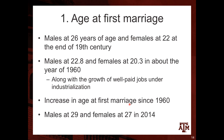On age at first marriage: males were around 26 years old and women were 22 years old at the end of the 19th century when they first got married. By the 1960s, males were 22.8 years on average and women 20.3, showing a decline in age at first marriage — from 26 to 22 for men and from 22 to 20 for women.